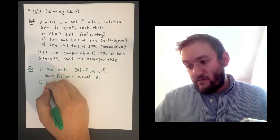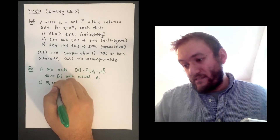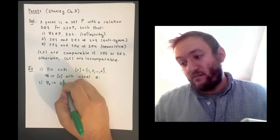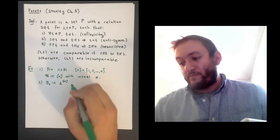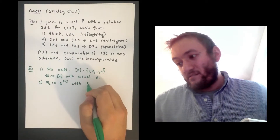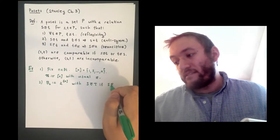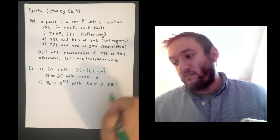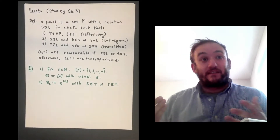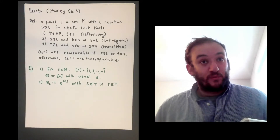Another one is B_n. This is defined as the poset which takes the power set of n and gives the inequality as s is less than or equal to t if s is a subset of t. Obviously you could have two sets that aren't contained one in the other, and then those elements would be incomparable in the poset.